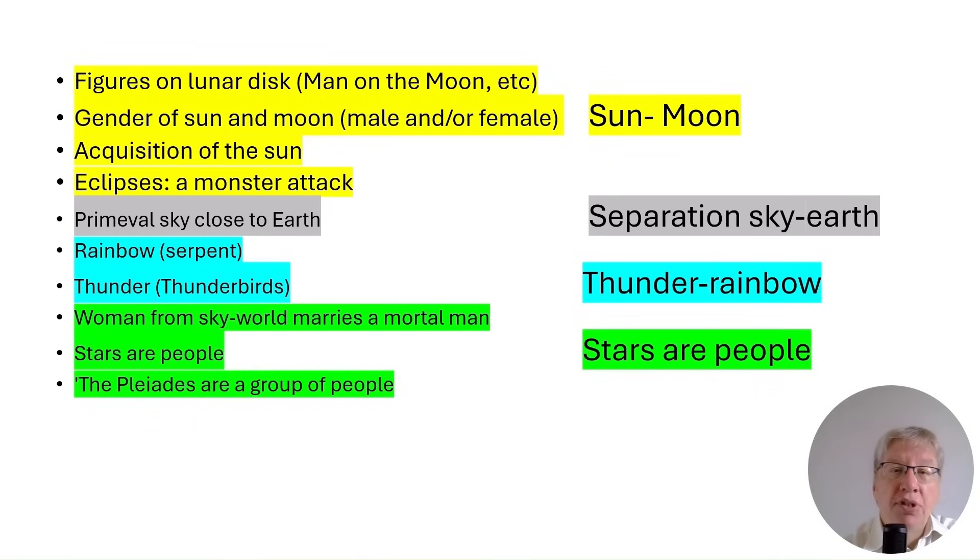These widespread motifs include sun-moon motifs and a motif about the separation of sky and earth. We also find recurring ideas such as a rainbow being a giant serpent or tales of powerful thunderbirds. And very importantly, this group includes a widespread motif of stars being seen as people, which contains the stories of the Pleiades as a group of people.